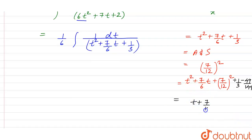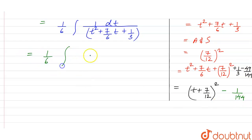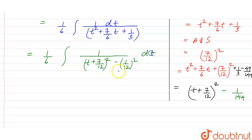So we have 1 by 6 and the integral of 1 upon t plus 7 by 12 whole square minus 1 by 12 whole square, with respect to dt. This simplifies because 48 minus 49 gives minus 1 upon 144.